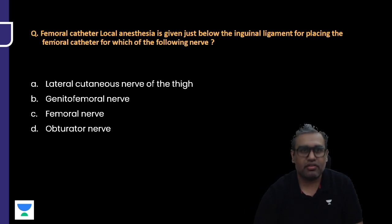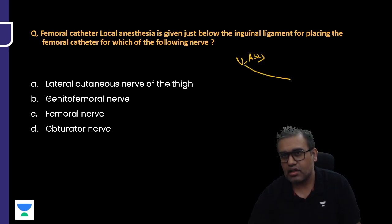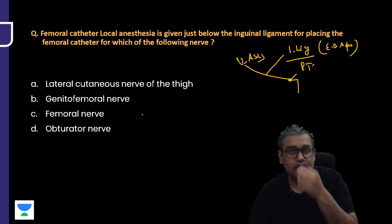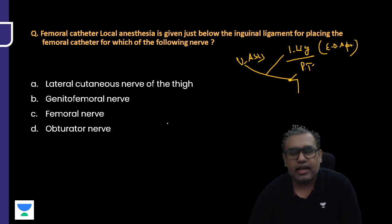Femoral catheterization: Local anesthesia is given just below the inguinal ligament. We can understand the inguinal ligament is from the ASIS till pubic tubercle. This is the inguinal ligament, also known as Poupart's ligament, from the external oblique aponeurosis. They're asking about femoral catheter placement just below the inguinal ligament, for which of the following nerve? Below the inguinal ligament there are few structures.